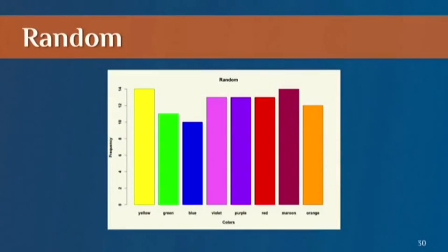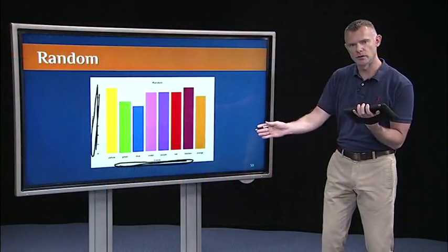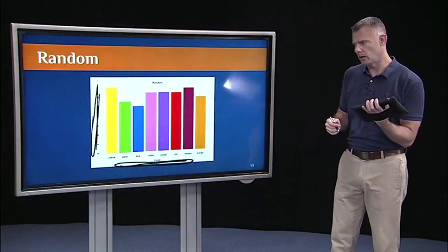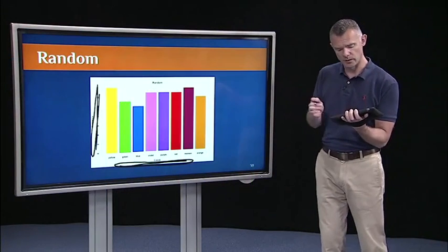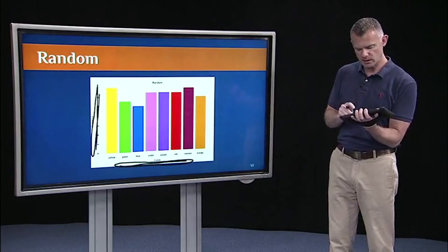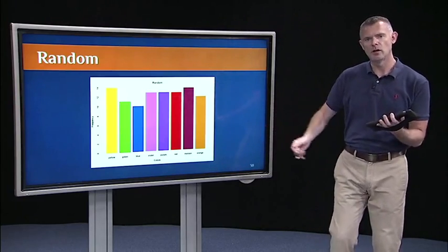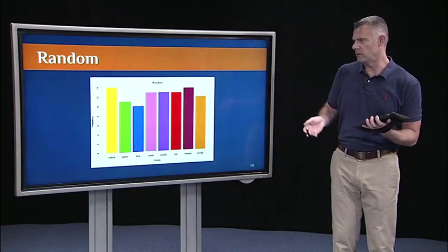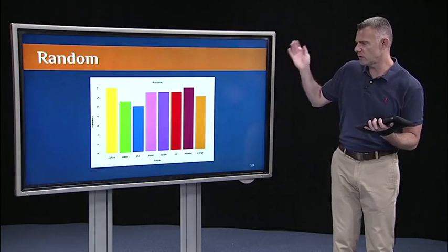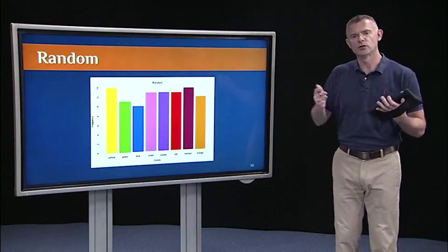So what's plotted here is on the x-axis, we have the different colors that were in the color wheel, and on the y-axis is frequency. And this is a histogram, which you're going to cover in the first lab later this week. And what happens is, you don't get them to be perfectly equal, but what you see is they're all about the same height. On average, you would get it to fall on the yellow piece of the pie just as often as it would fall on the red piece of the pie, if it were truly random.